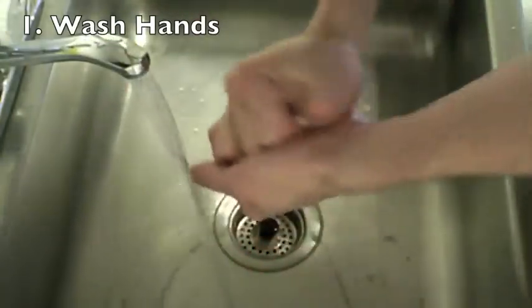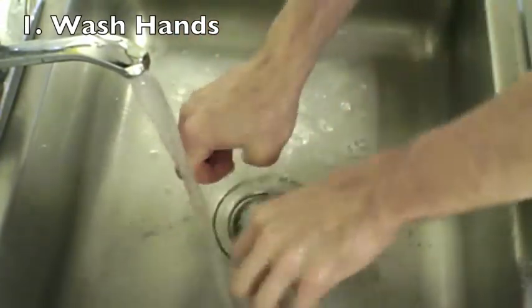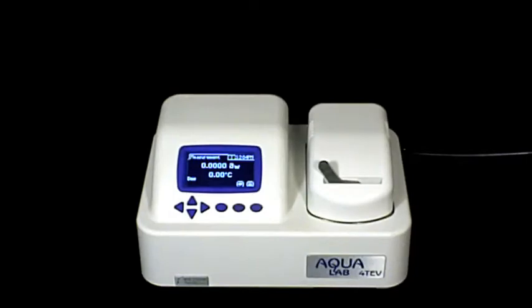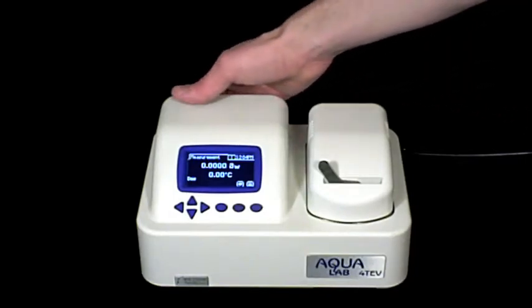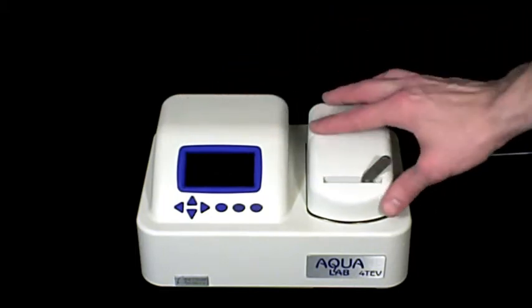Let's get started by washing our hands first. This ensures that oils that naturally occur on the hands do not interfere with the cleaning process. Once you have washed your hands, turn off the power to your Aqualab, and then open the lid to the sensor chamber.